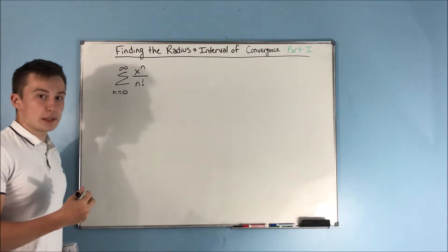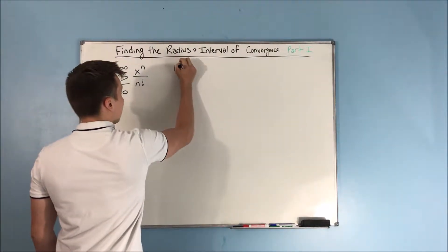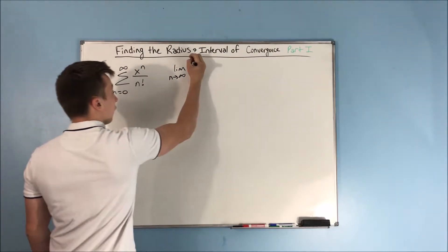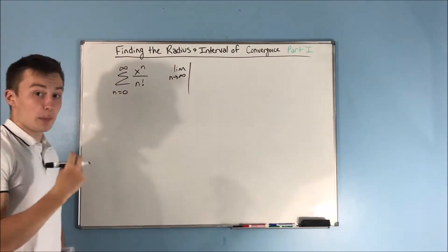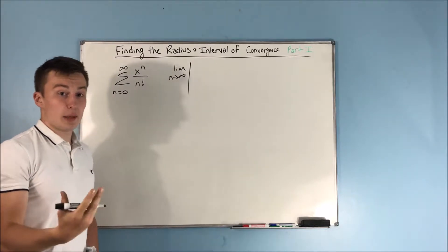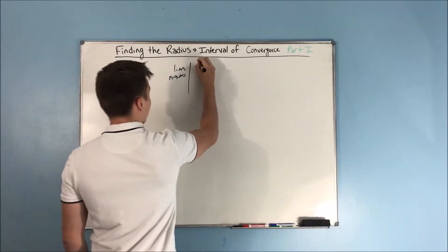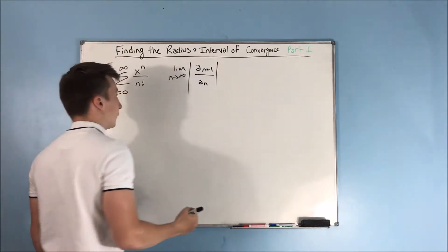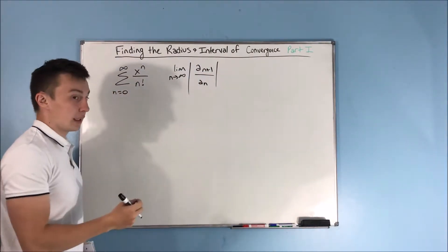We start off by doing this using the ratio test. We're going to take the ratio test, the limit as n approaches infinity of the absolute value. It's going to be a sub n plus 1 over a sub n. Just the ratio test.